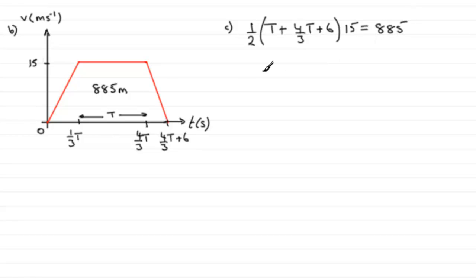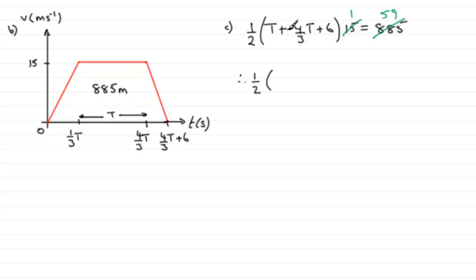Now, there are many ways you could go about solving this, but what I notice is that 15 goes into 885 exactly. So I could divide both sides by 15, giving 1 on the left and 59 on the right. So I've now got half of 1t plus 4 thirds t, which is 7 thirds t plus 6, and that equals 59.